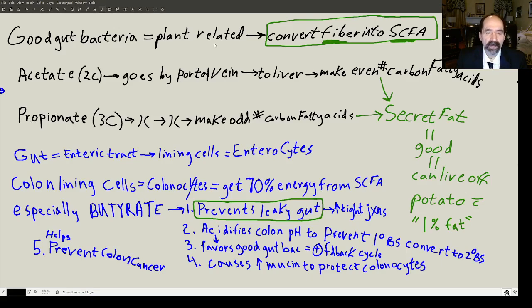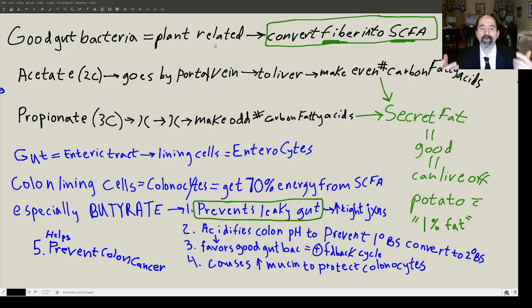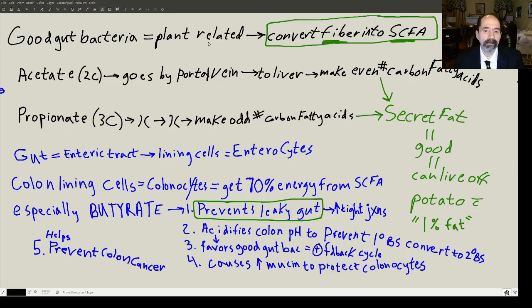So the good gut bacteria, which comes from eating plants — there are basically two types of gut bacteria. There's one that comes from eating meat and processed food with a lack of fiber, and that's not symbiotic with us. Our natural diet is a lot of fiber, like a plant-based diet. The symbiotic bacteria want to keep us alive to keep their good apartment in our colon. They will convert some of the fiber into short-chain fatty acids — the two-carbon acetate, three-carbon propionate, and the four-carbon butyrate.